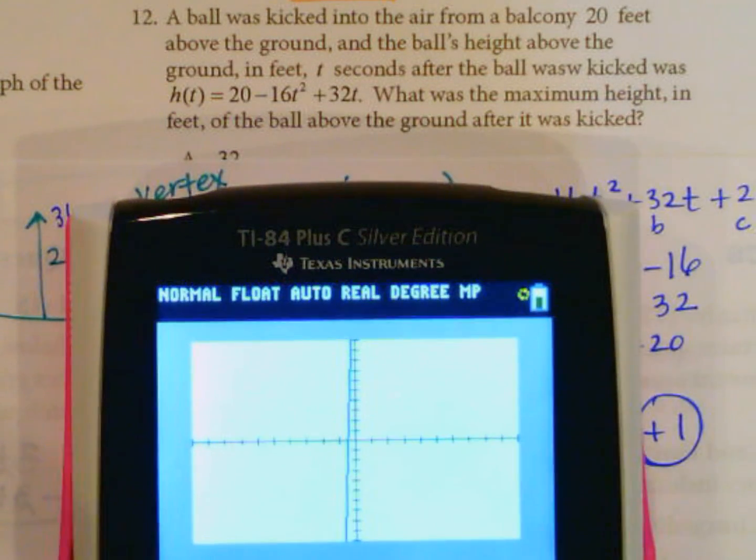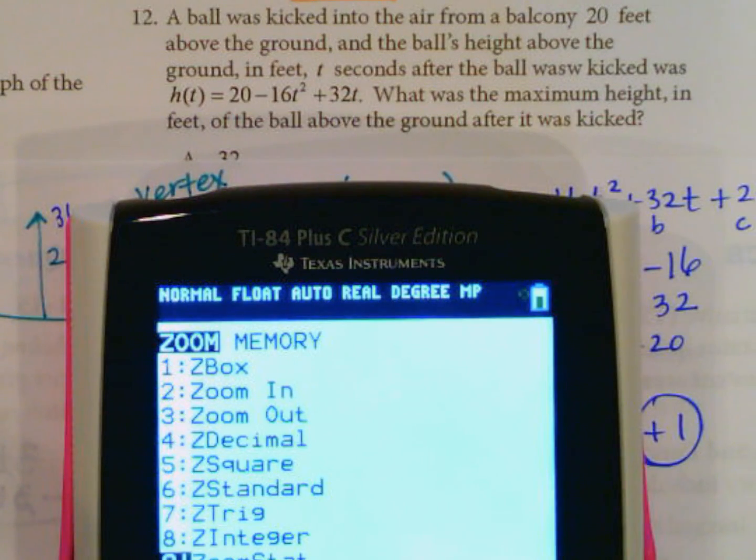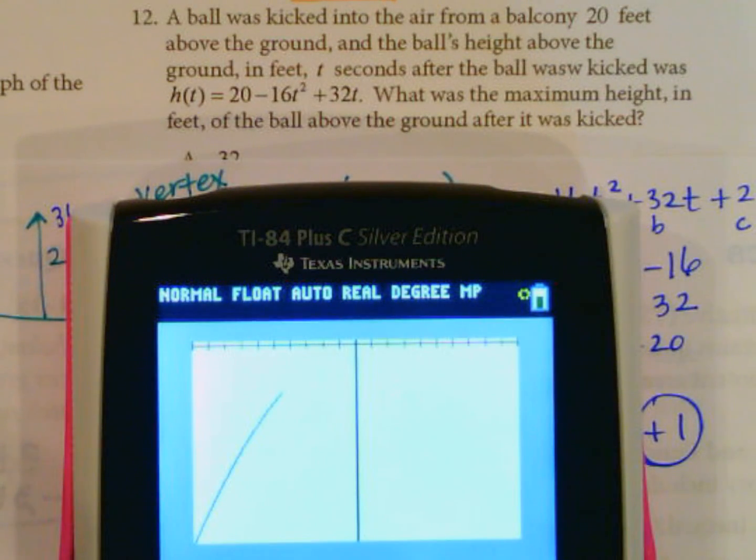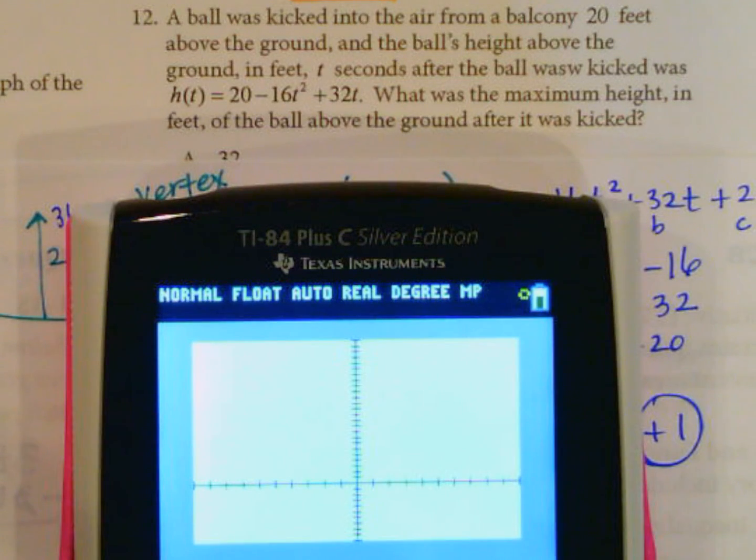It should look something—let me get my window here. This is not working how I wanted to, sorry one second. Let's go back to the standard, just change the window so we can see that height of 20 that we talked about. So my y max I'm going to change to say 25.